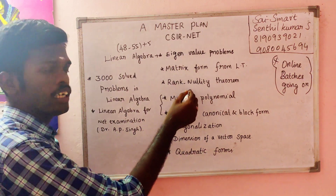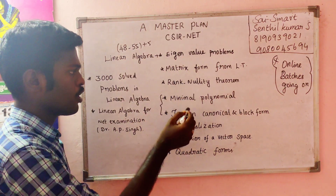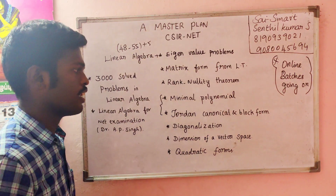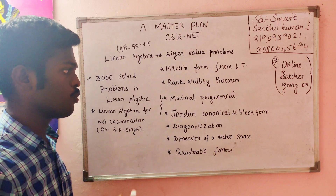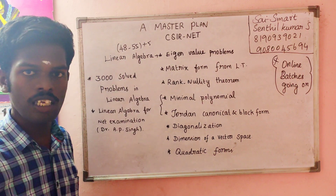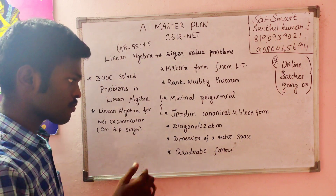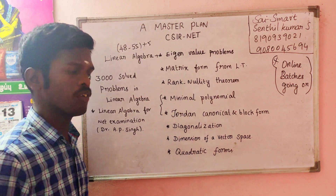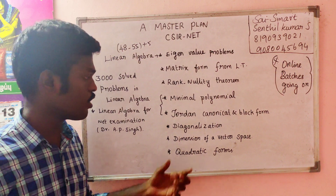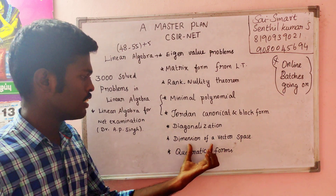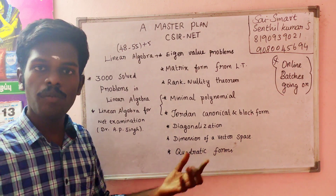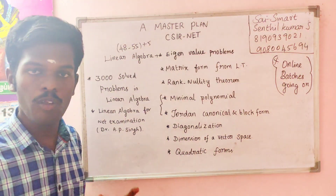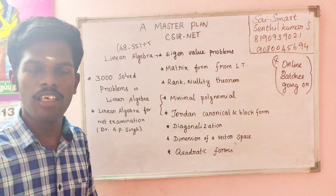Matrix form, minimal polynomial problem, Jordan canonical block form is the main topic. The dimension of the vector space is very easy — it is the custom. So it will be very easy. Let's start with the video.